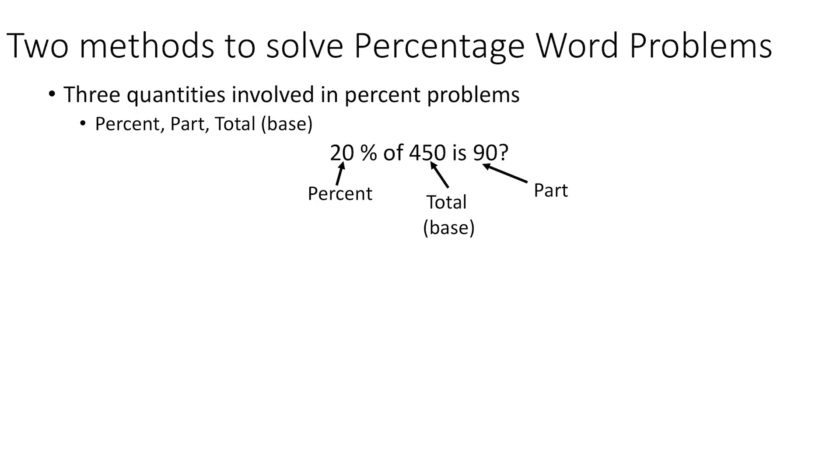One is the percent, which obviously has the percent units on it, and one is the part and one is the total, or what you can refer to as the base. Normally, because a percent is usually less than 100%, usually the part is the smaller value when compared to the total.